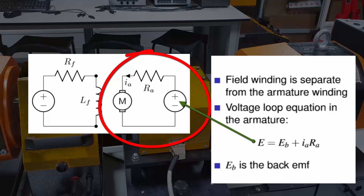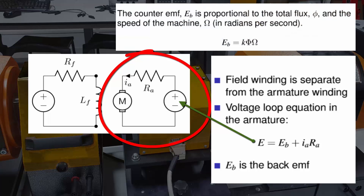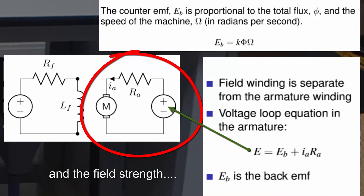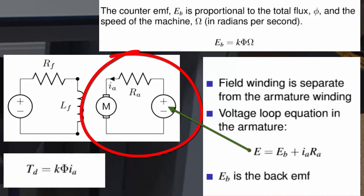The back EMF is really important in the understanding of DC motors. When the armature spins inside a magnetic field, it generates an EMF according to Faraday's law. This EMF opposes the current that causes the motor to spin in the first place, so it appears in opposition to the applied voltage. Importantly, the faster the motor spins, the higher this back EMF will be. In fact, the back EMF is proportional to the speed of the motor multiplied by a constant, which is a property of the construction of the motor. We can also derive an equation for the torque of the motor. Torque is a rotational force, and in a DC motor, torque is proportionate to the armature current multiplied again by a constant.